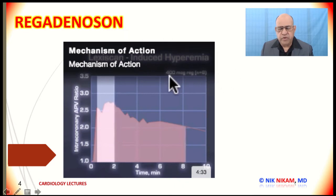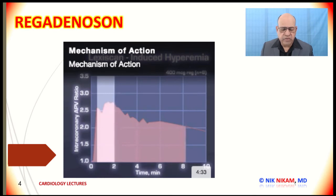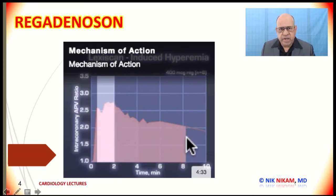Regadenosine works very quickly. It is injected as 400 micrograms or 0.4 mg intravenously over just 10 seconds. Coronary vasodilatation peaks at about 30 seconds and increases coronary flow by almost 2 to 2.5 times normal. This effect lasts about 2 minutes, with a rapid decline thereafter, which is why the majority of symptoms last less than 2 to 3 minutes.